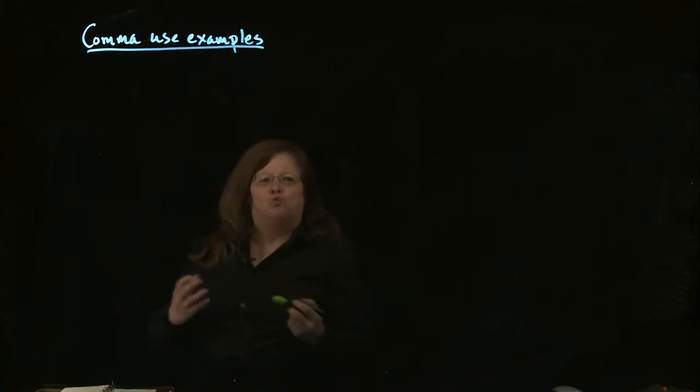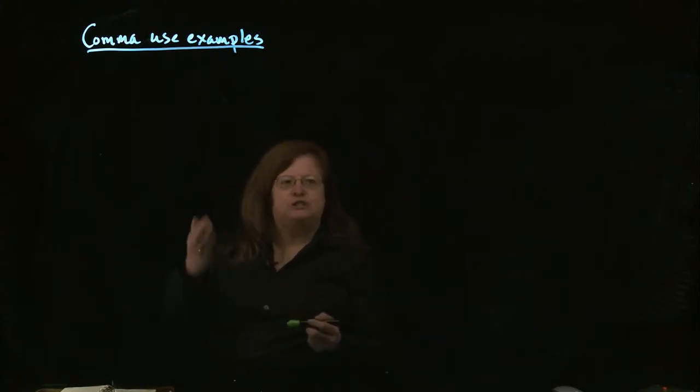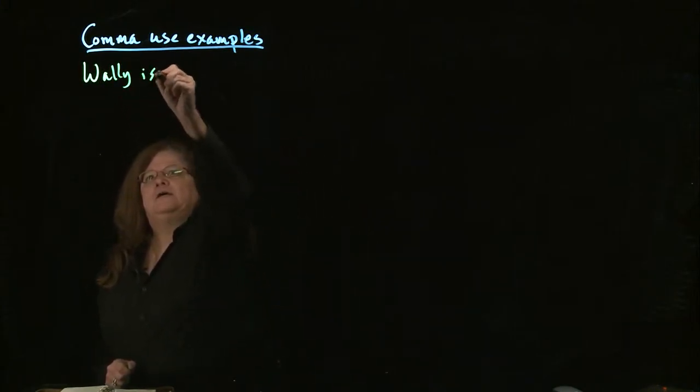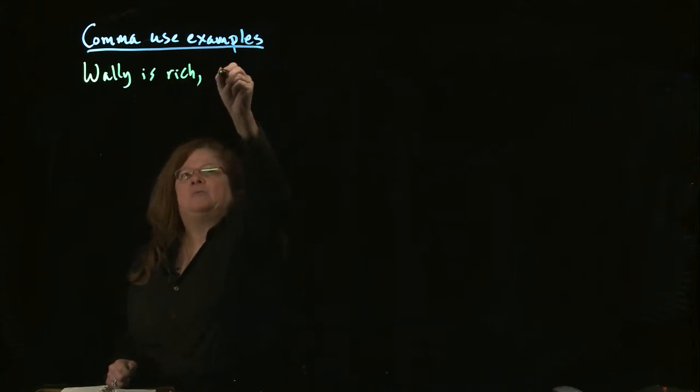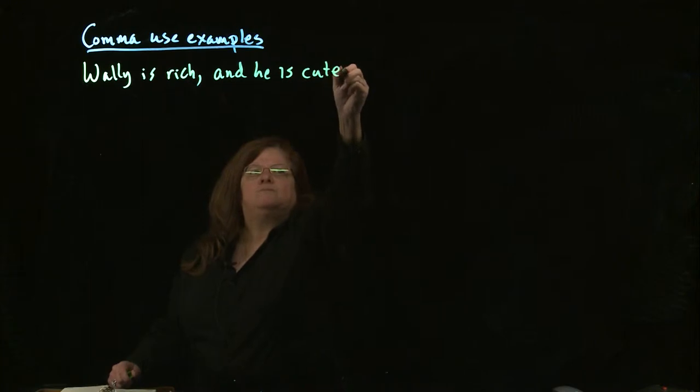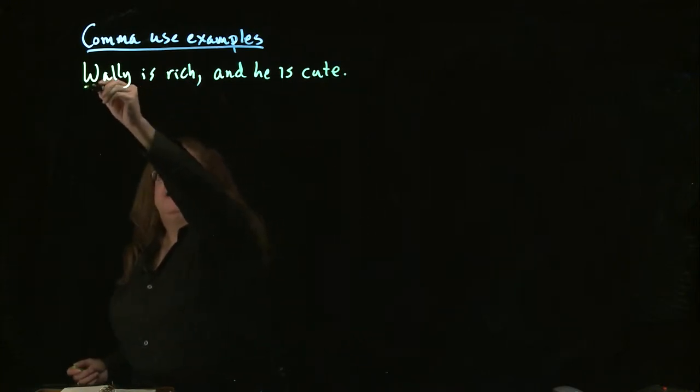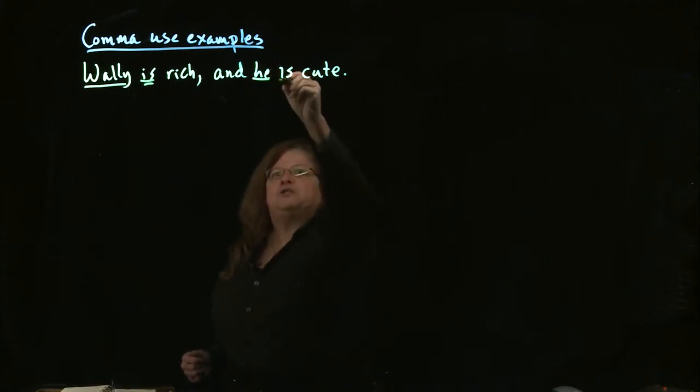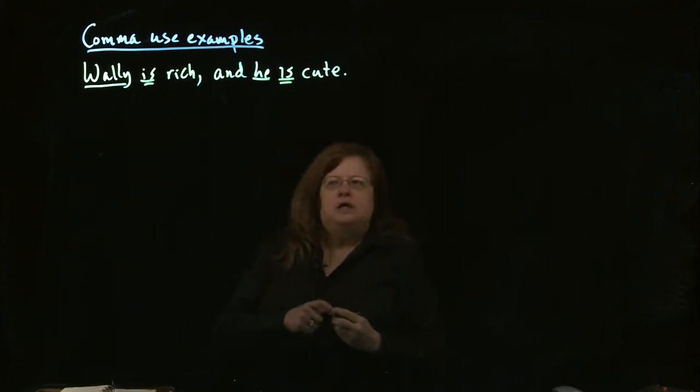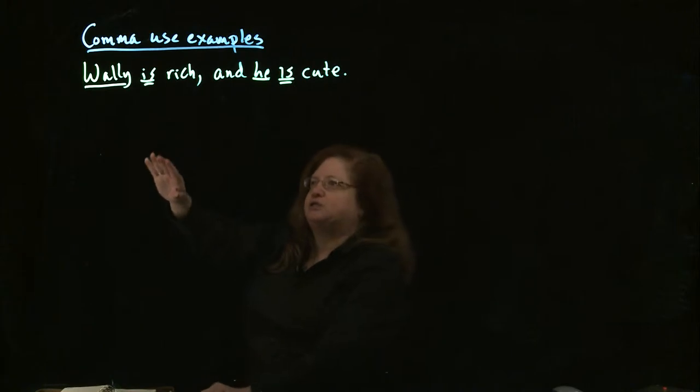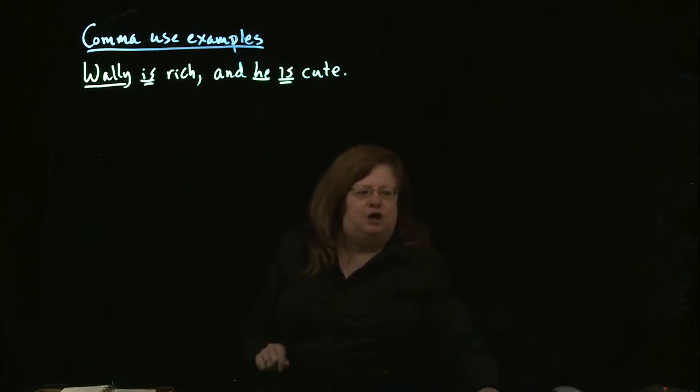we use commas when we're connecting complete sentences using the fanboys. So I might have Wally is rich, comma, and he is cute. If we look at this one, we can tell we have a subject and a complete verb over here. We have a subject and a complete verb over here. Remember, since we have complete sentences, the fanboy by itself is not strong enough to connect complete sentences. So we do use the comma to help it out.